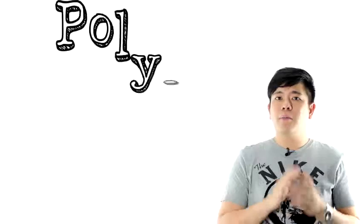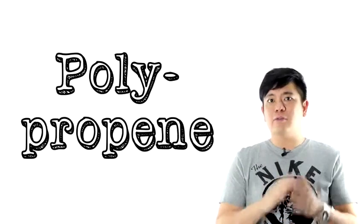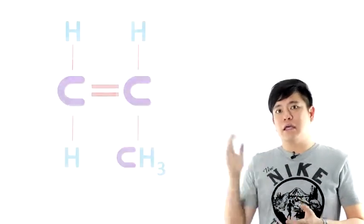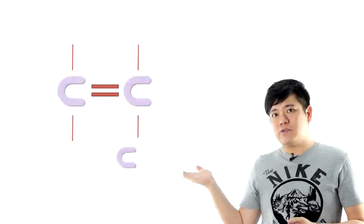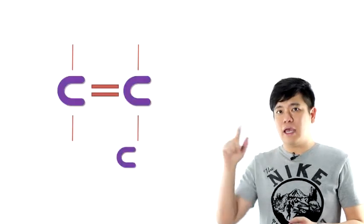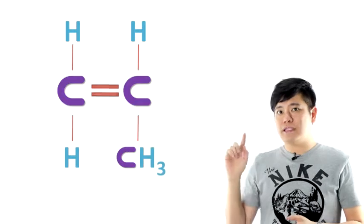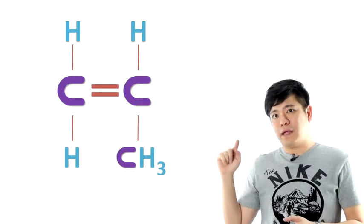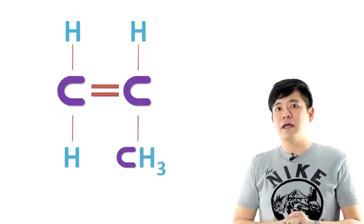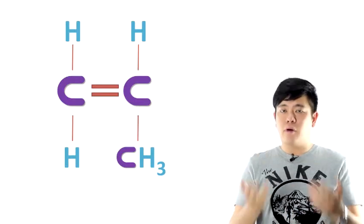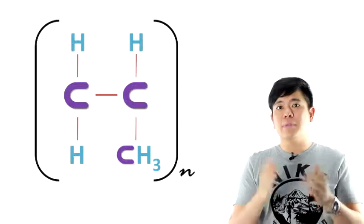Next, we have polypropene. Polypropene is this structure with the monomer. Three carbon, and then you have six hydrogen around it. So you can see that three carbon, one single bond, and then the other will be a double bond. So when you polymerize it, you can use it as a plastic bottle, like the bottle just now.